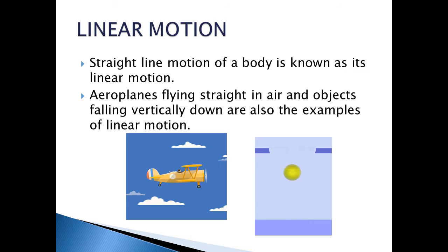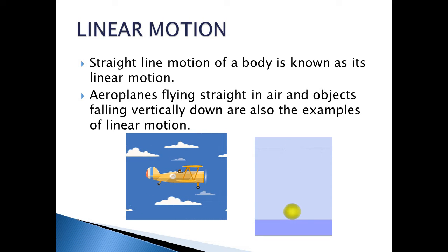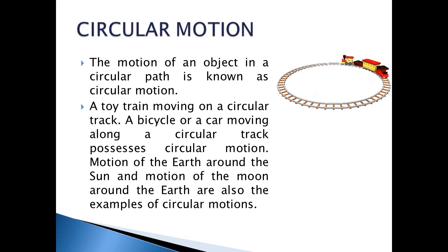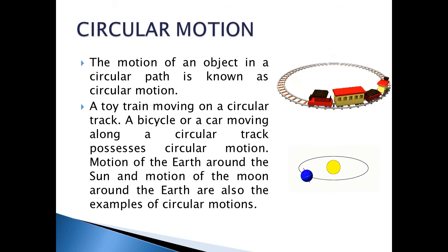Linear motion: straight-line motion of a body is known as its linear motion. Aeroplanes flying straight in air and objects falling vertically down are examples of linear motion. Circular motion: the motion of an object in a circular path is known as circular motion. A toy train moving on a circular track, a bicycle or car moving along a circular track, the motion of Earth around the Sun, and the motion of the Moon around the Earth are all examples of circular motion.